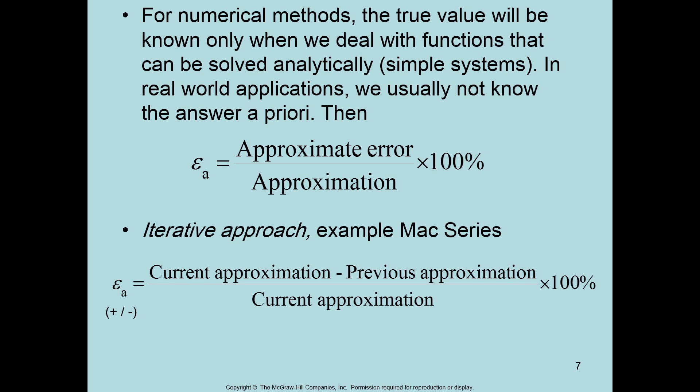To calculate the approximate error, consider an experiment done three times giving values of 9, 8, and 7. From 9 to 8, the error is 9 minus 8; from 8 to 7, if the current value is 7 and the previous was 8, it gives a negative result divided by the current approximation, multiplied by 100. This approximate error helps us judge whether our value is going up or down, guiding how many trials or terms to continue — as in the Maclaurin series example.